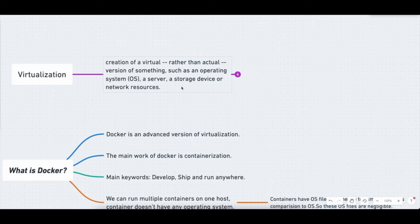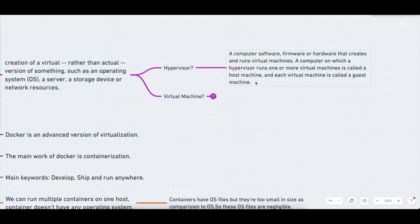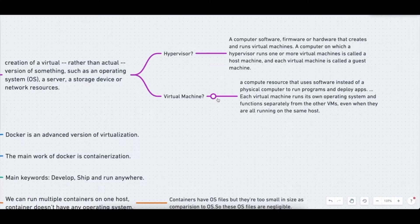Two concepts come into play here: the hypervisor and the virtual machine. A hypervisor enables you to build and create virtual machines on a host — for example, on your local machine using VirtualBox. A virtual machine is a computer resource that uses software instead of a physical computer to run programs. Each VM runs its own operating system and functions separately from others, even on the same host. You must pre-allocate resources when creating a VM, whereas in Docker you don't need to pre-allocate any resources to build a container.